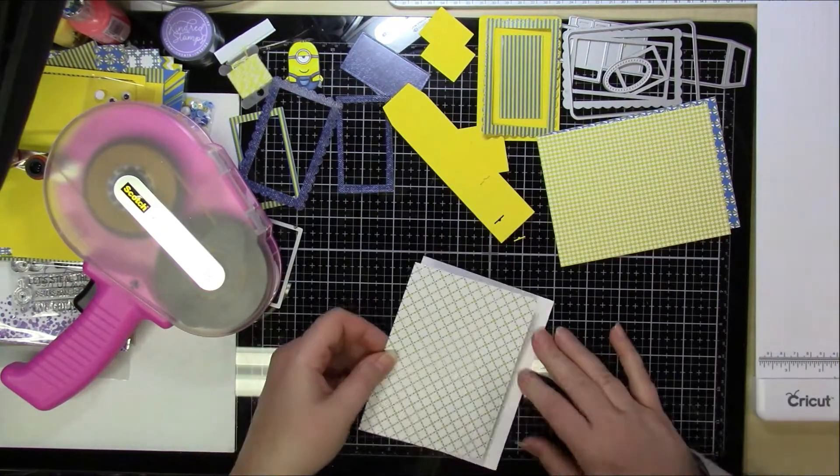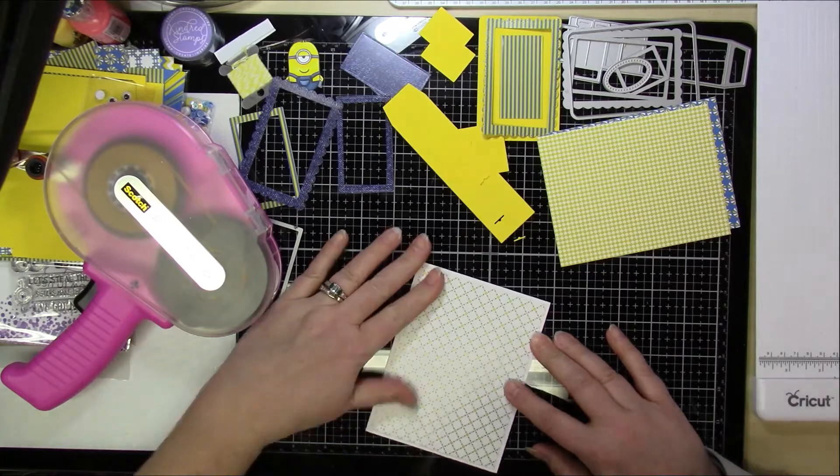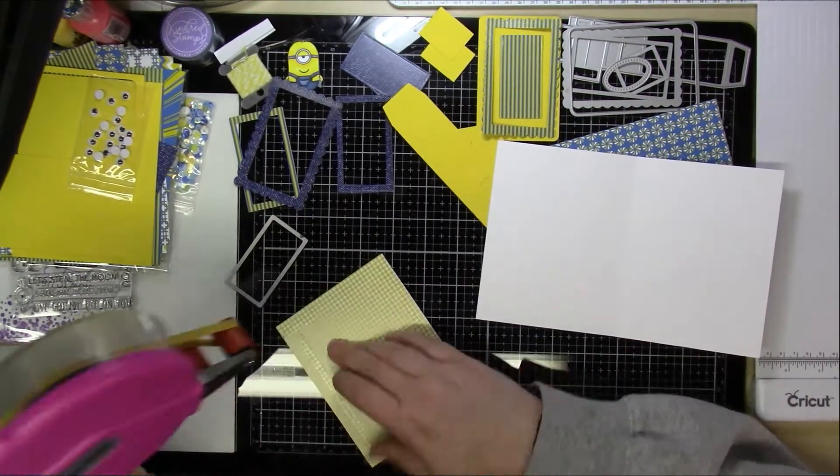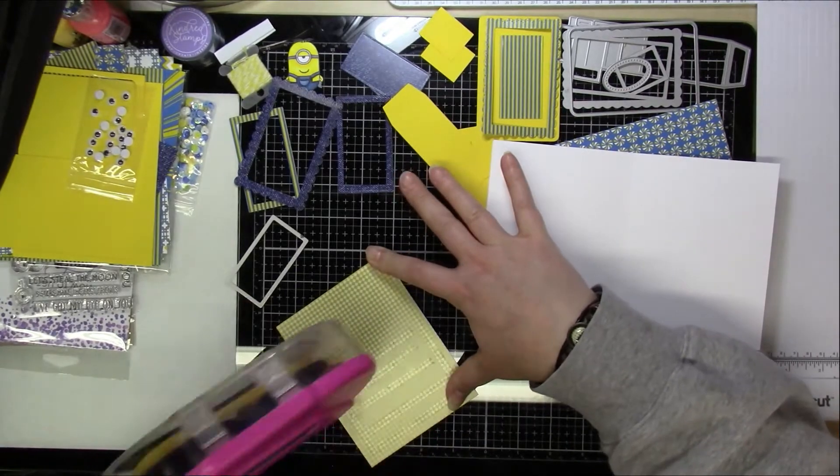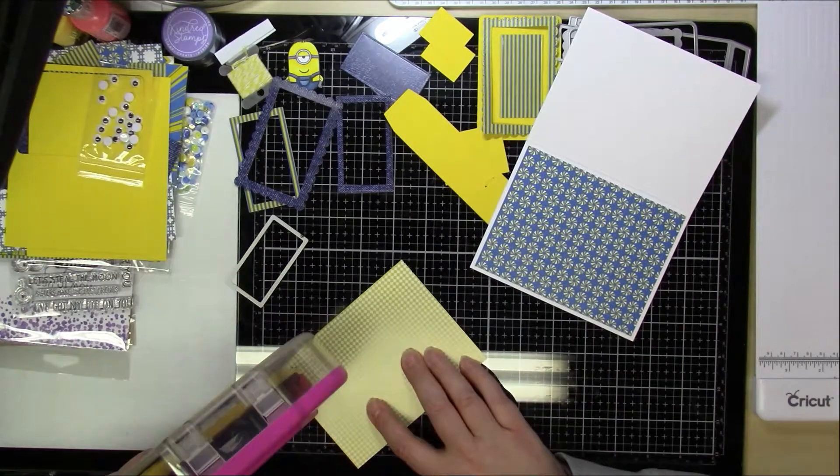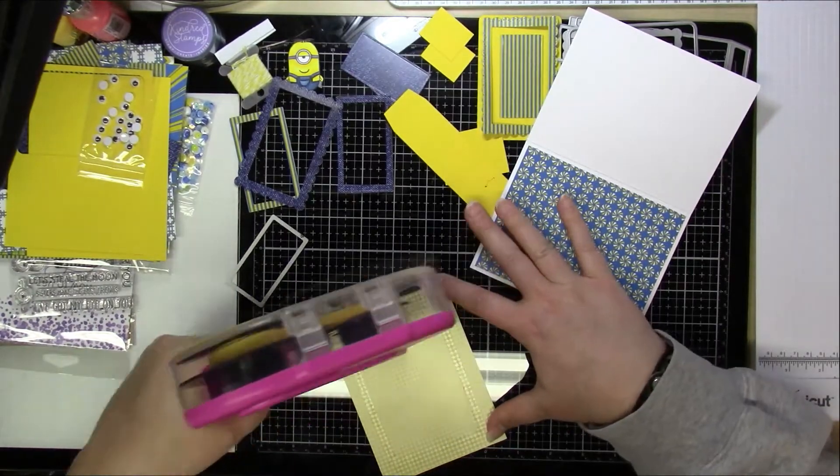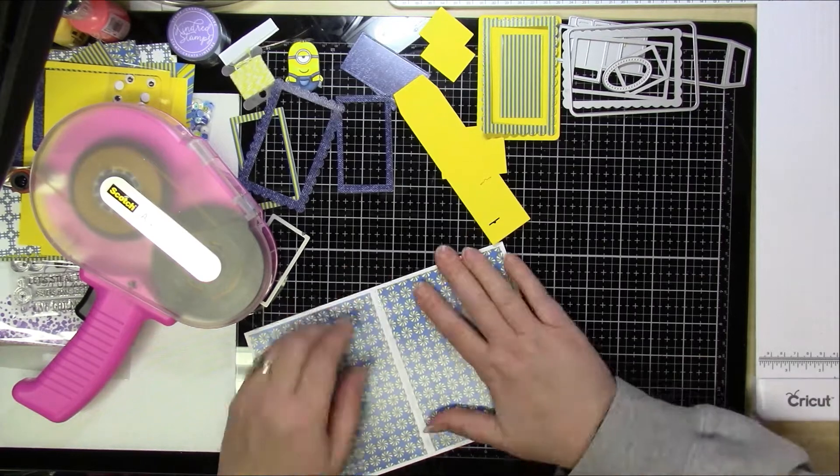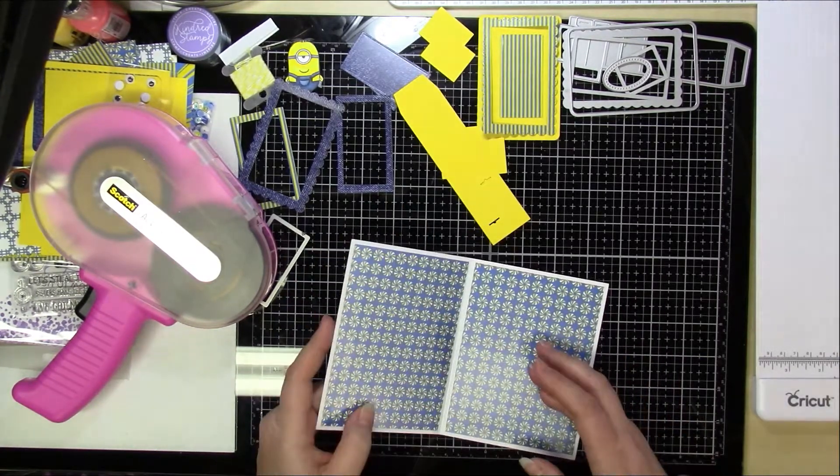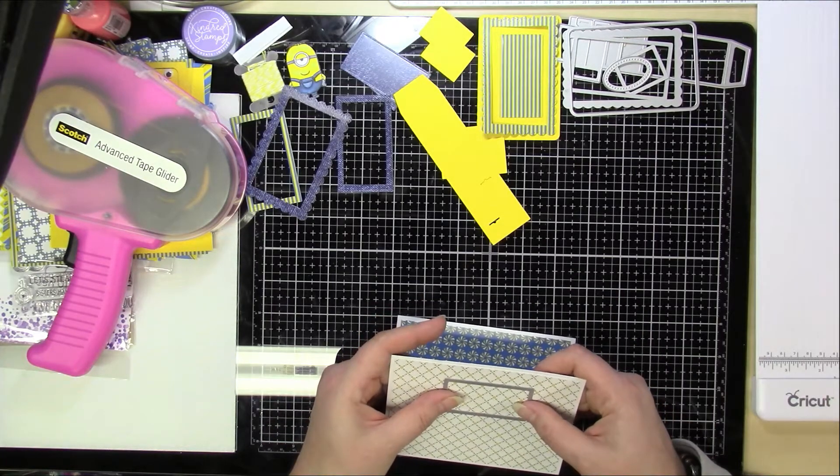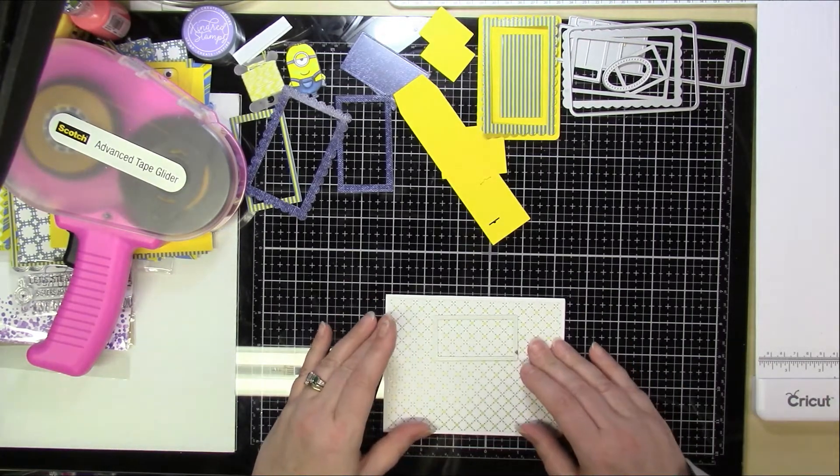And I'm just going to start adhering the pieces onto the card base itself. So this is just all of the panels that are going into it. And not the smallest rectangle. That's that little tiny one that's going to fit on part of the mechanism if you want to decorate that. But the second smallest rectangle.